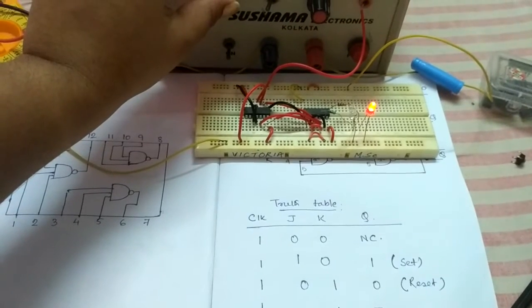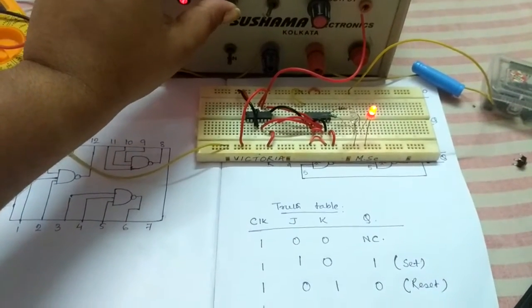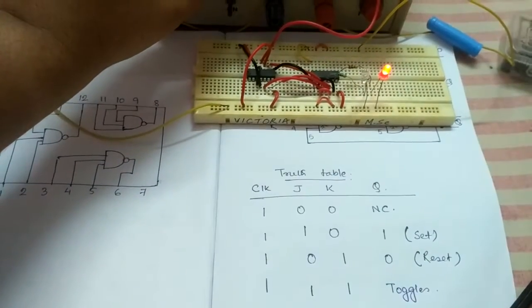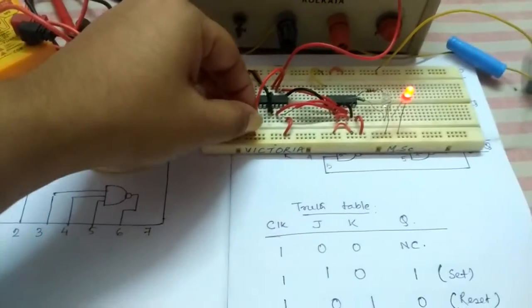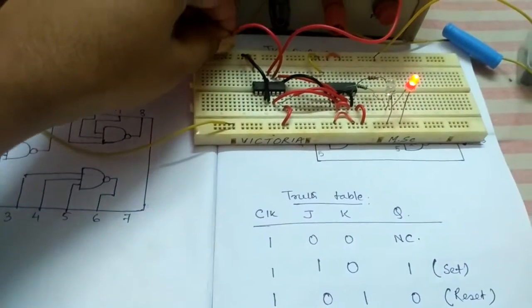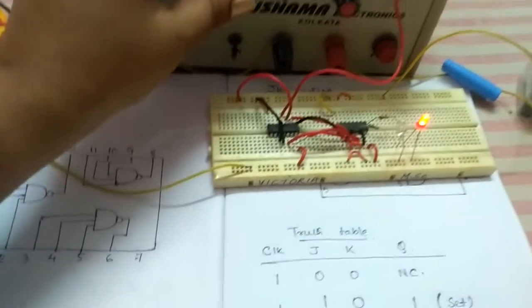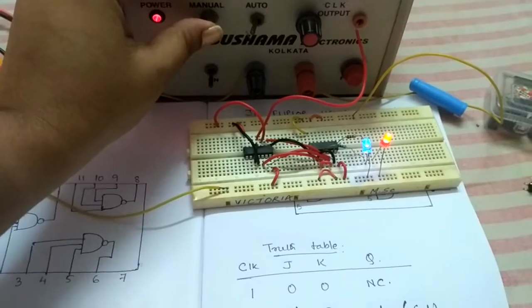Our last part is both of them will be 1, then it will toggle. Making both of them as 1 and then applying the clock pulse, you can see the toggle.